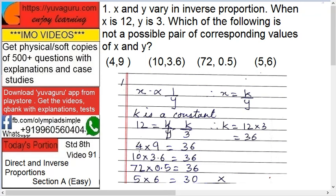Then check the values. 4 into 9, first value, equals to - it should come out to be 36. Because k is constant. Constant means it never changes. So it will always be, let there be any value of x or y, k will always be the same. So 4 into 9 is 36.